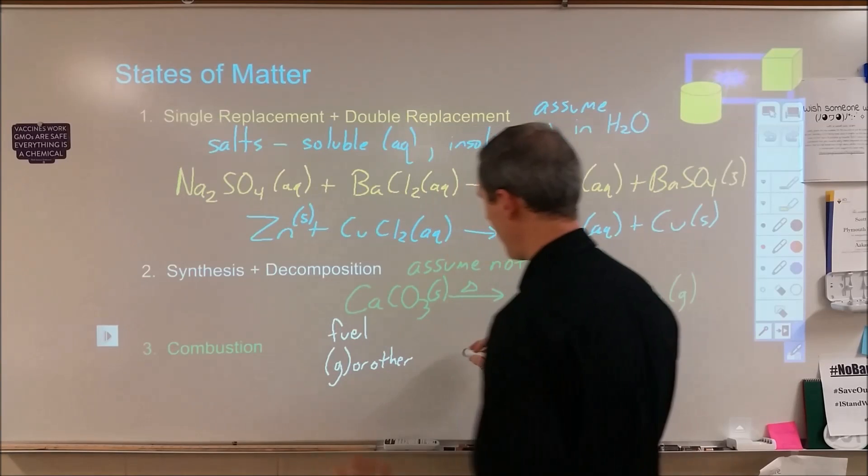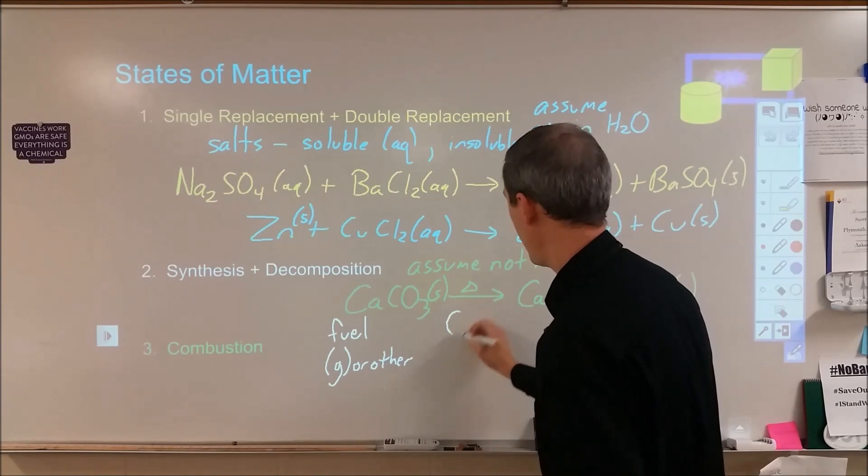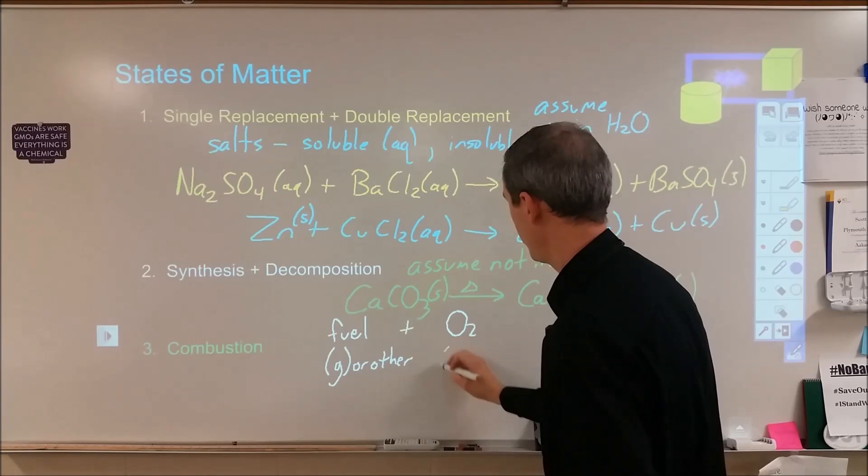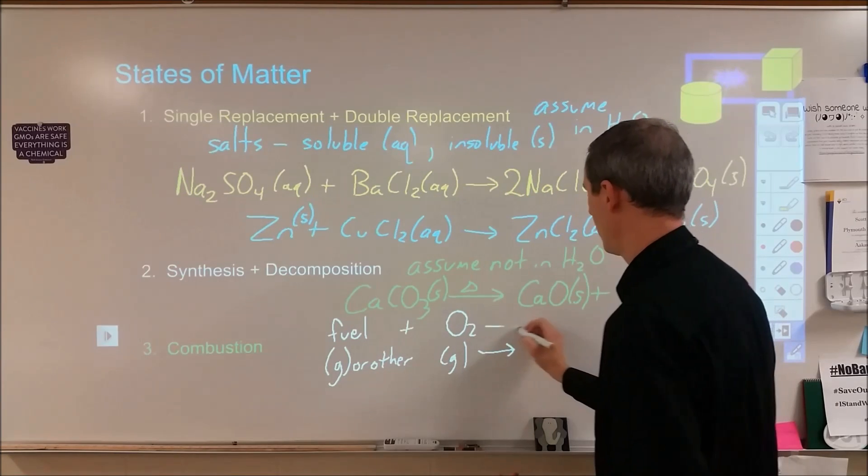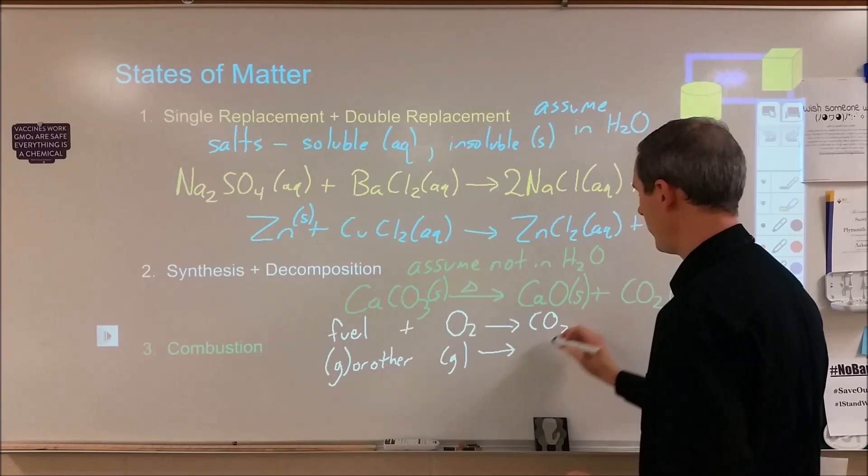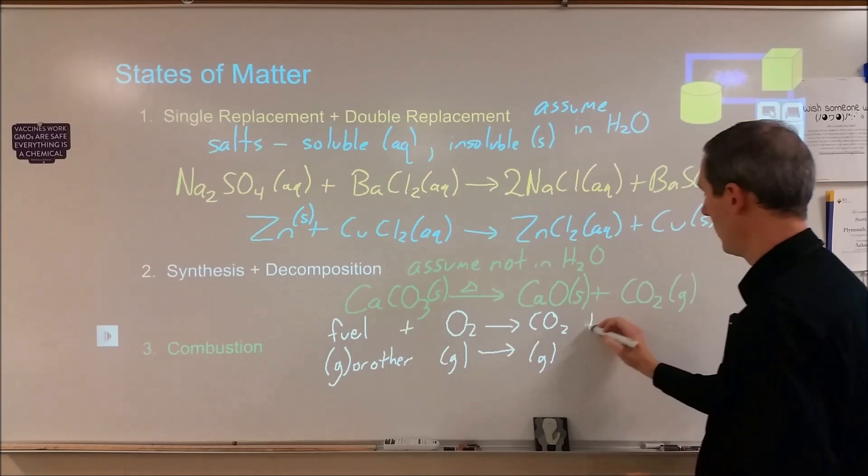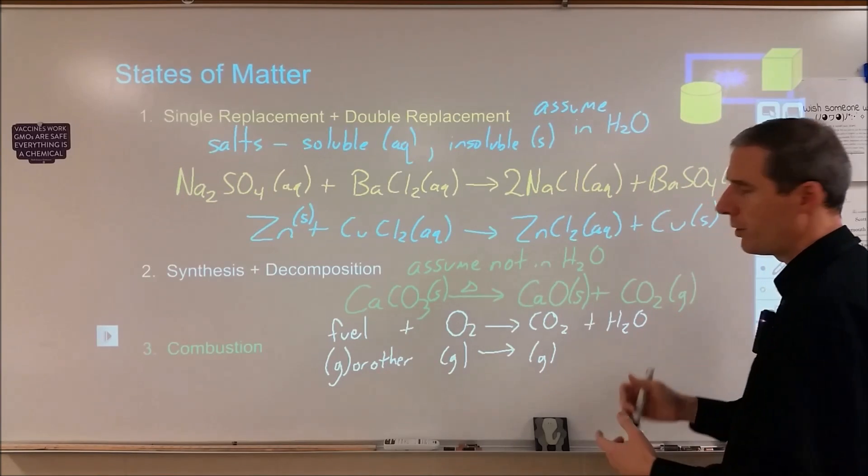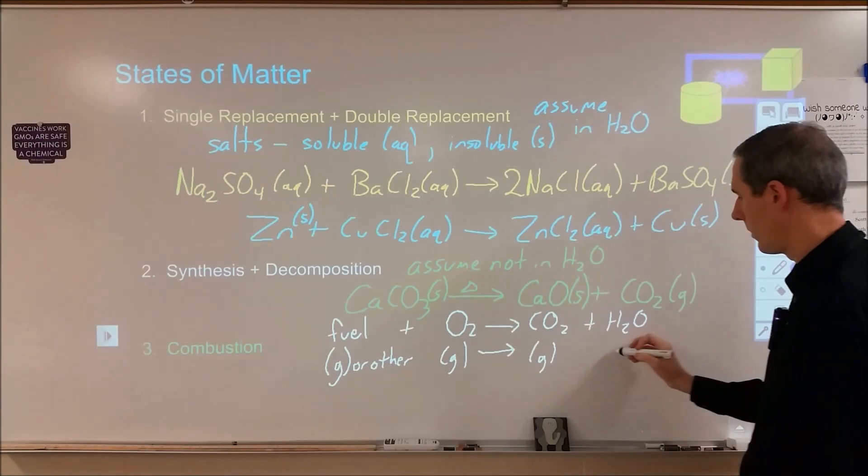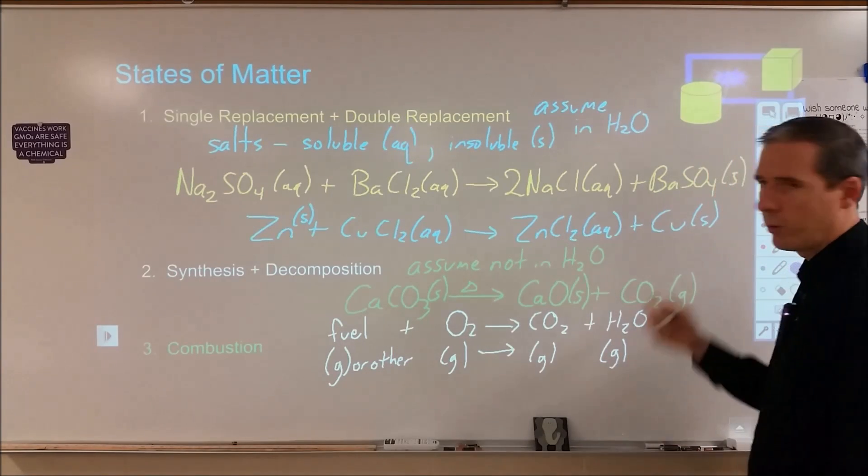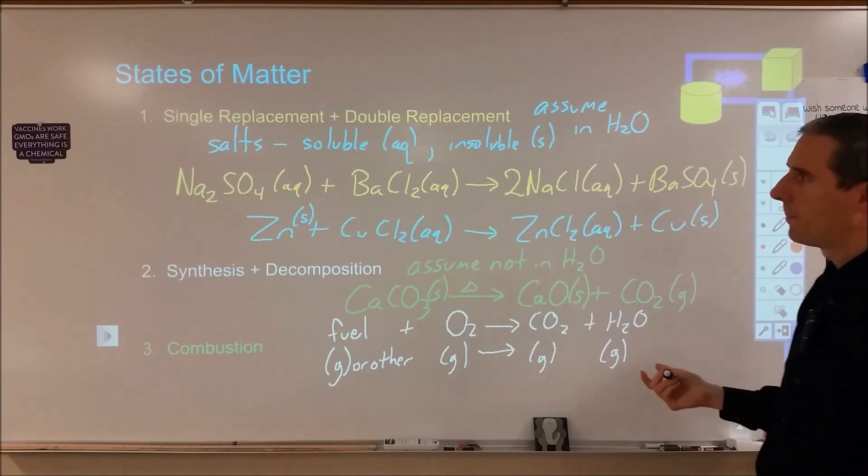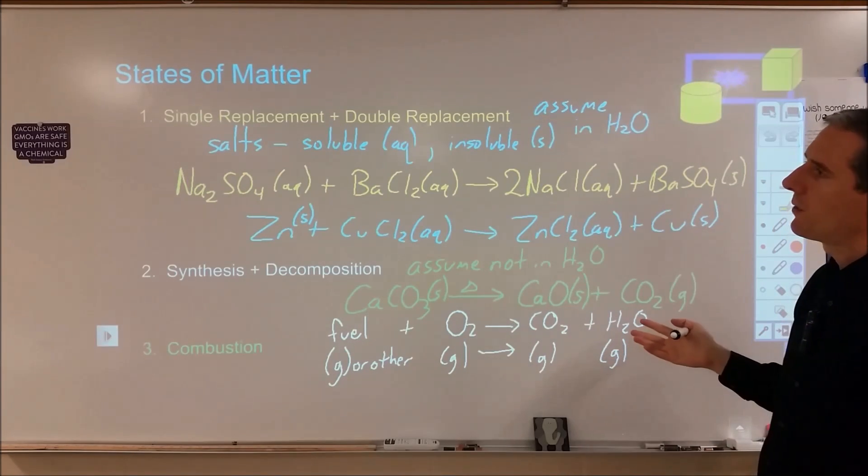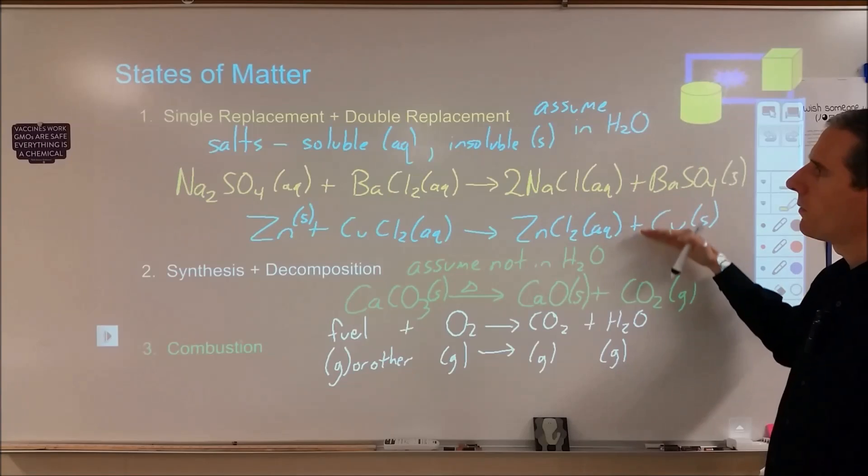So your fuel is going to be gas or other. And then you're adding that to oxygen, which is going to be in the gaseous state, of course. And then we're going to form CO2, which is a gas, and then water. Now when you're burning something, the water that gets produced is generally steam, but it can also cool down. So gas or liquid is both acceptable for that. So these are kind of your rough guidelines for how you want to go through and do states of matter.